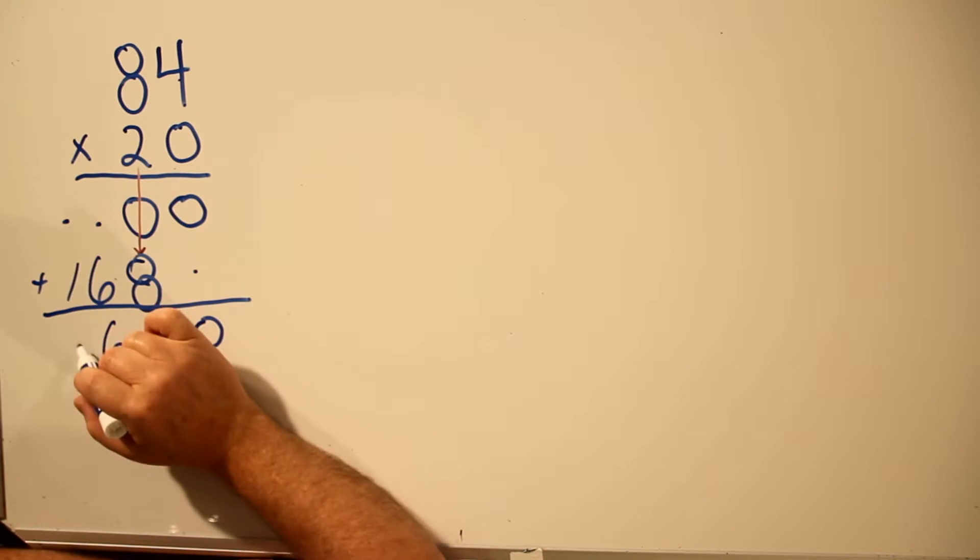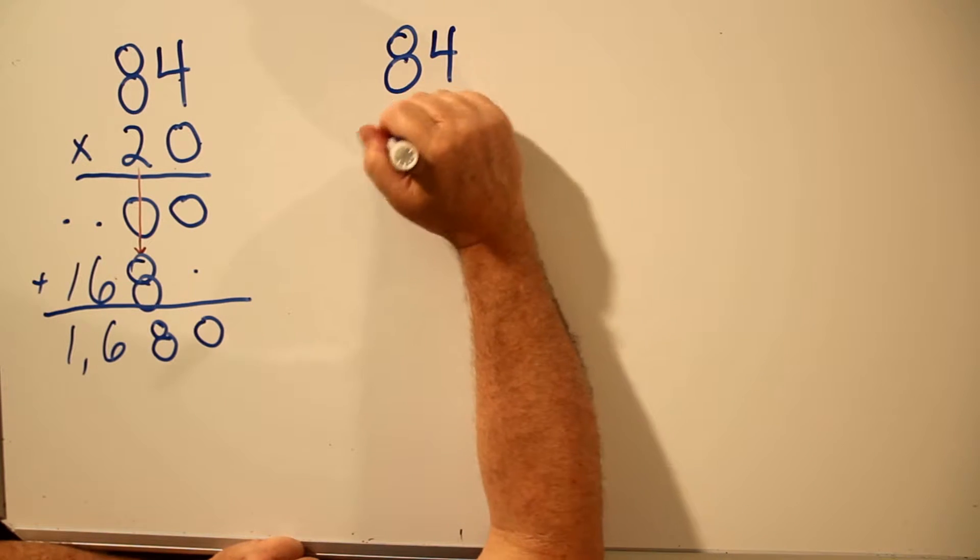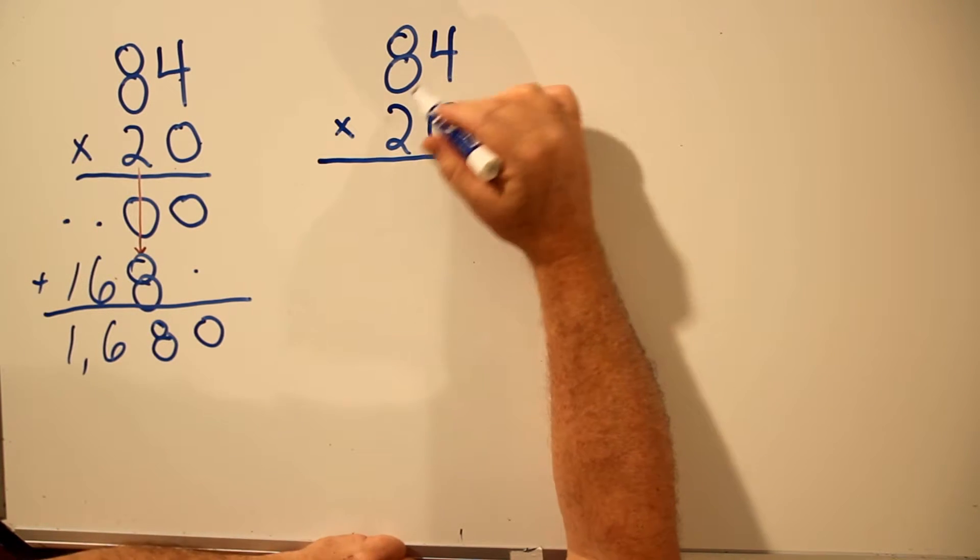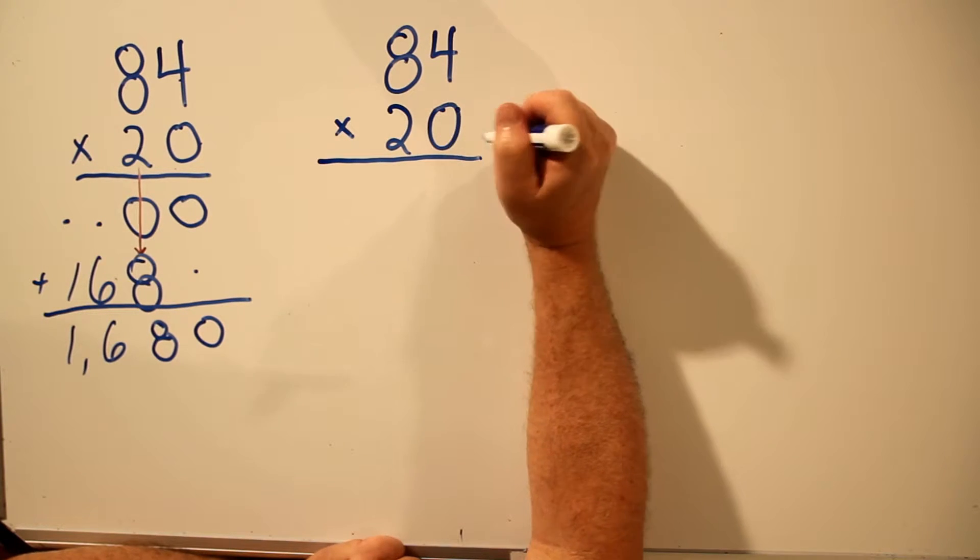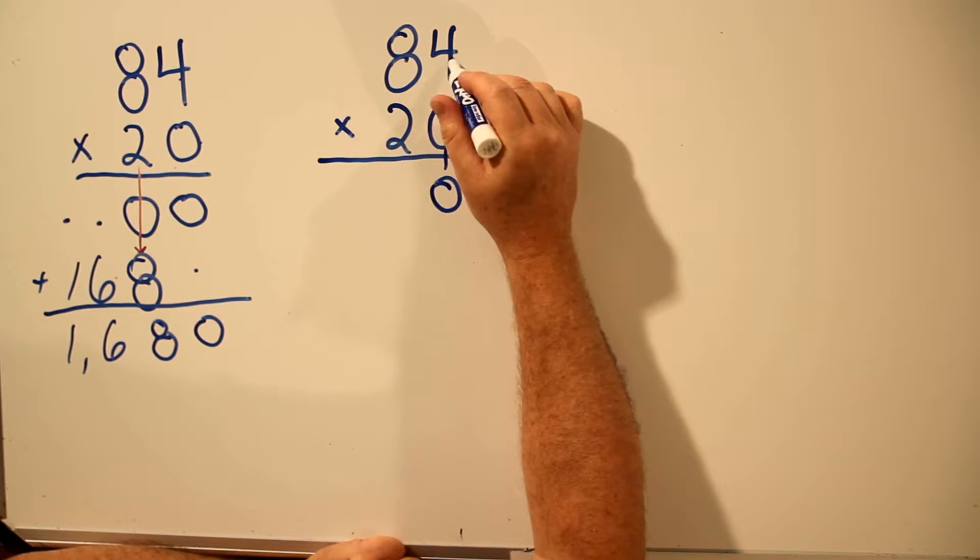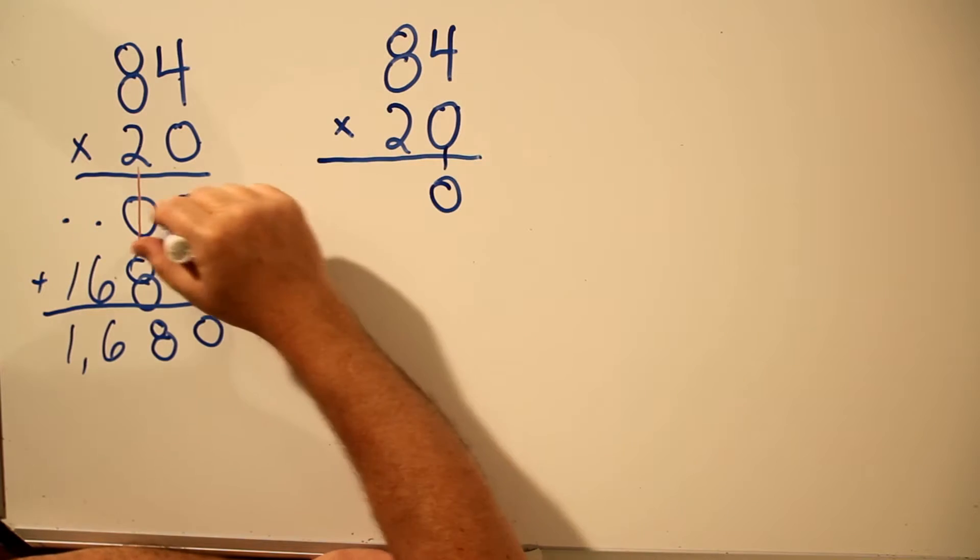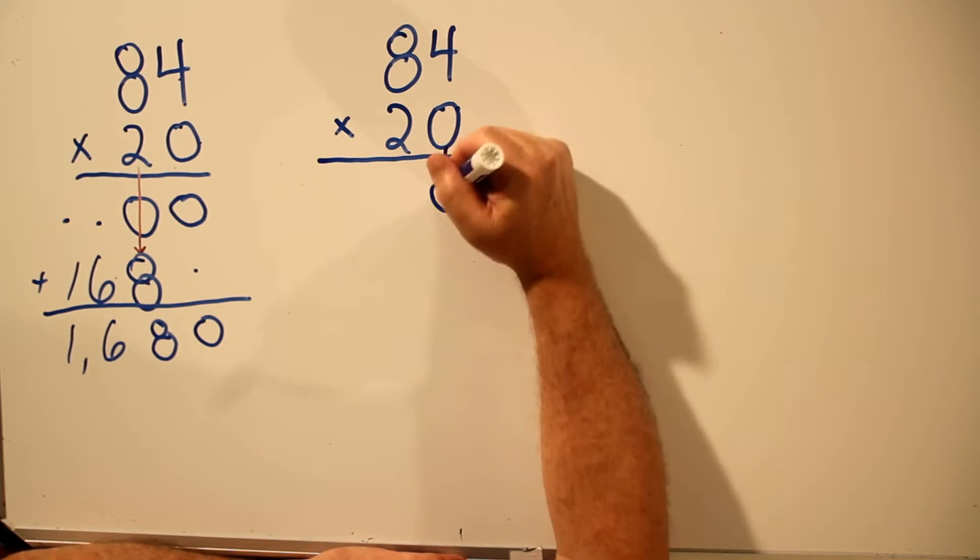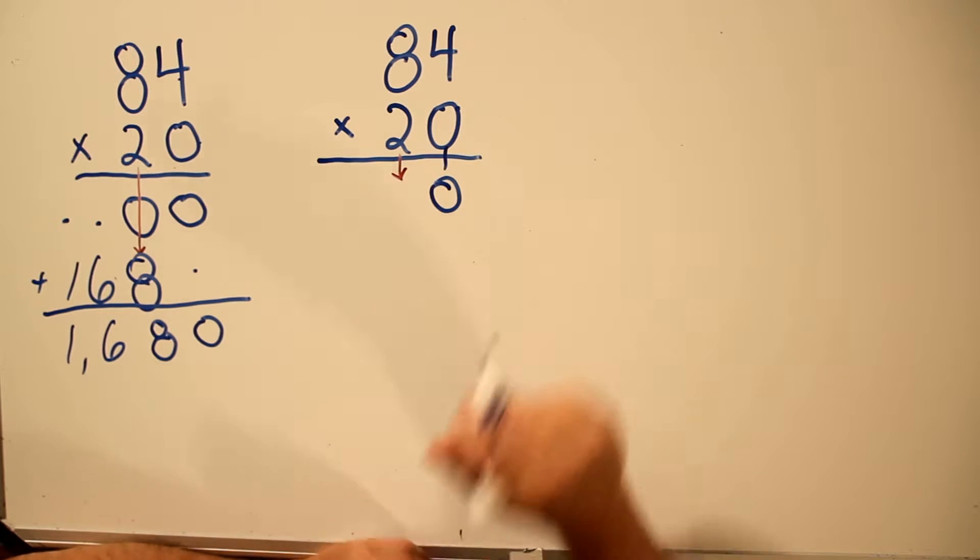0 plus 1 is 1. So in the special case where there's a zero, we can save a step. Instead of multiplying through by zero and then creating a second row, when there's a zero in the bottom number, you simply bring it down and then start immediately with the next number over. Instead of multiplying the whole number through by zero and starting a second row, just bring the zero down and place your answer underneath the 2 in the same row.